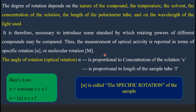Before going into specific rotation, we shall understand the impact of concentration and length of the tube on the optical rotation. The observed optical rotation alpha is proportional to the concentration of the solution: if concentration increases, more chiral molecules are present in solution, and they rotate the plane polarized light to a higher angle.